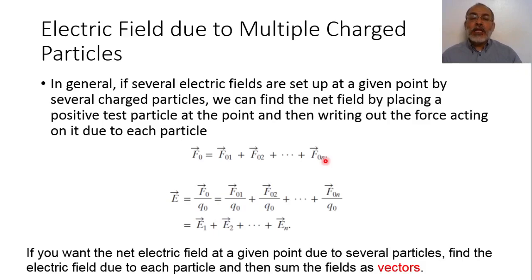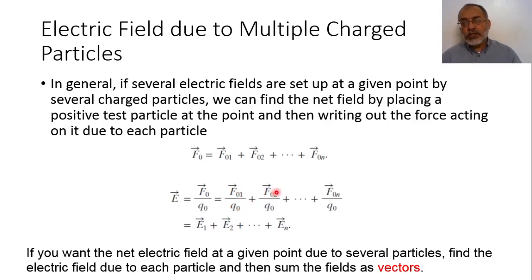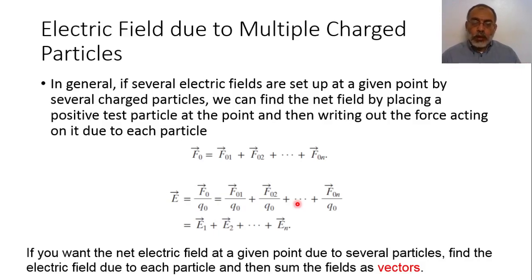If we want the electric field at this point, we divide the total force by the magnitude of the test charge Q naught. The total electric field is the net force at the test charge over the magnitude of the test charge. According to this summation, the electric field is the force due to each charge divided by Q naught, and all these quantities are added as vector quantities — X components to X components, Y components to Y components.